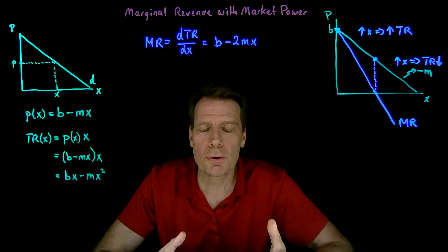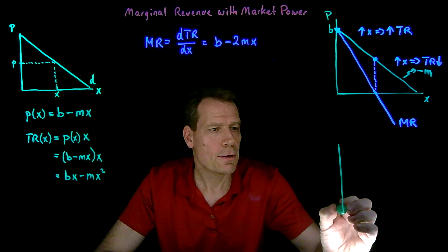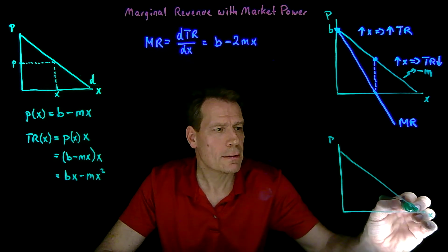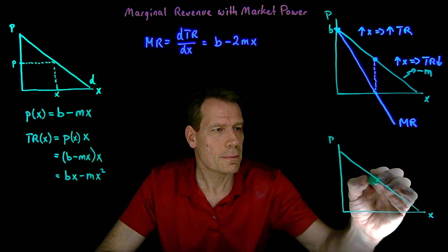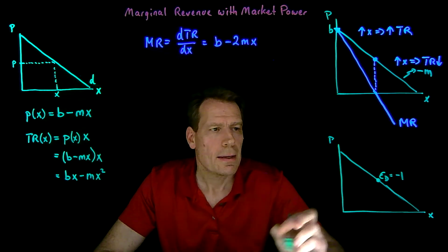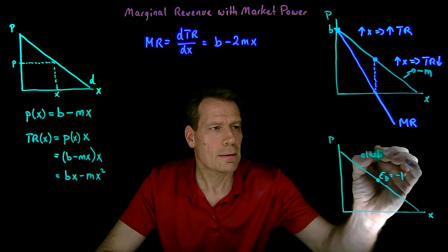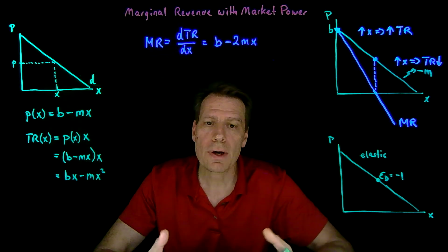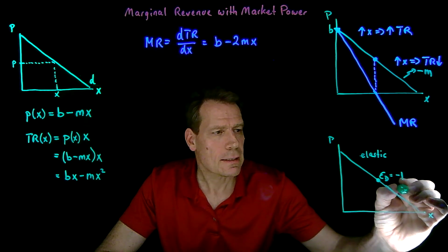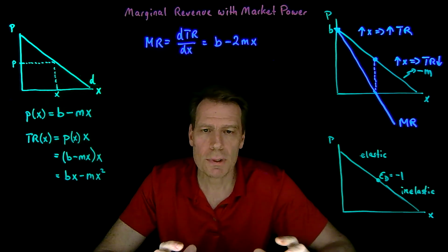We can now relate this to what we learned about price elasticities of demand. When we talked about price elasticities for a linear demand curve, we said that at the midpoint of that demand curve, elasticity of demand is exactly equal to minus 1. Above that midpoint, we are on the elastic portion of demand, where the price elasticity of demand is greater than 1 in absolute value. Below that midpoint, we are on the inelastic portion, where price elasticity is between minus 1 and 0.